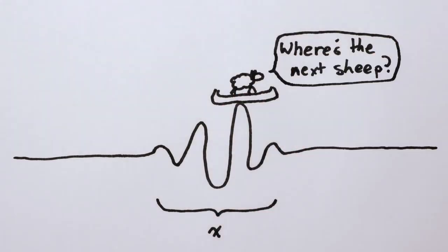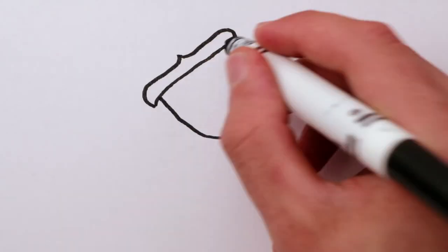Well, a localized pulse doesn't really wave, so we can't measure the frequency of its crests. And that's the uncertainty principle in a nutshell.